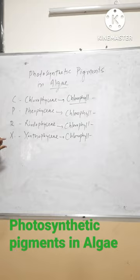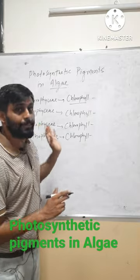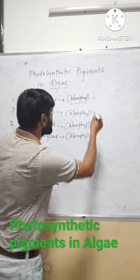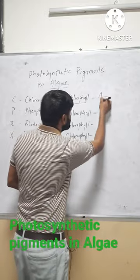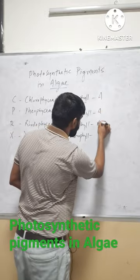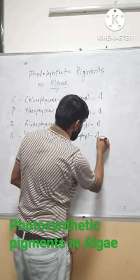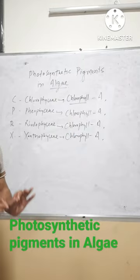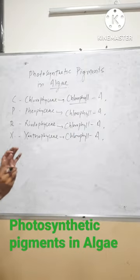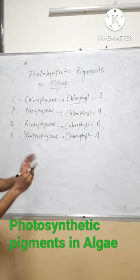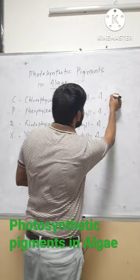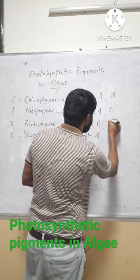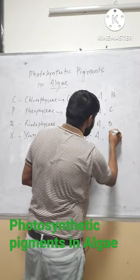Coming to photosynthetic pigments, chlorophyll is common to all groups. Now I am writing the remaining chlorophyll molecules — b, c, d, e — also in alphabetical order: b, c, d, e.